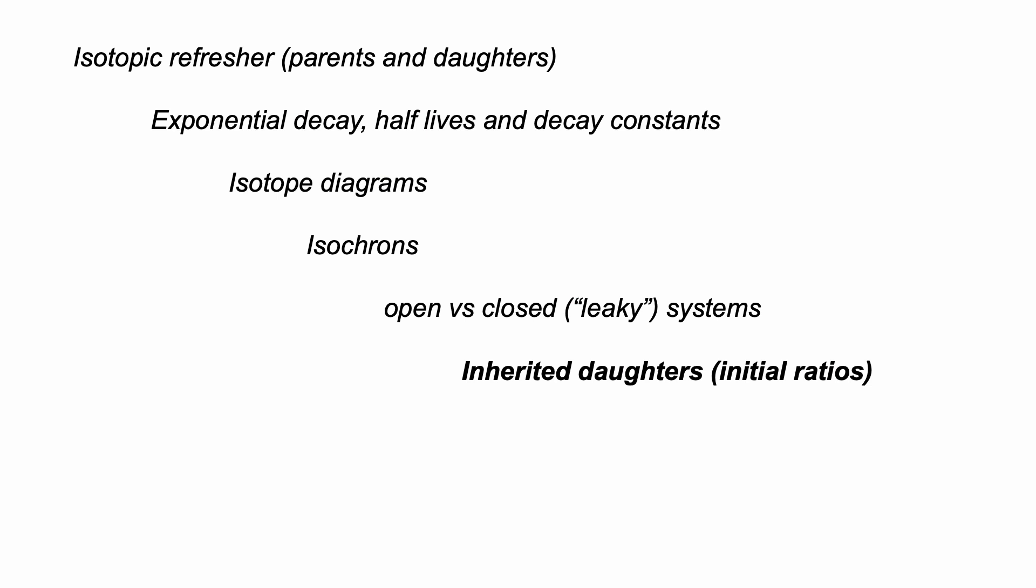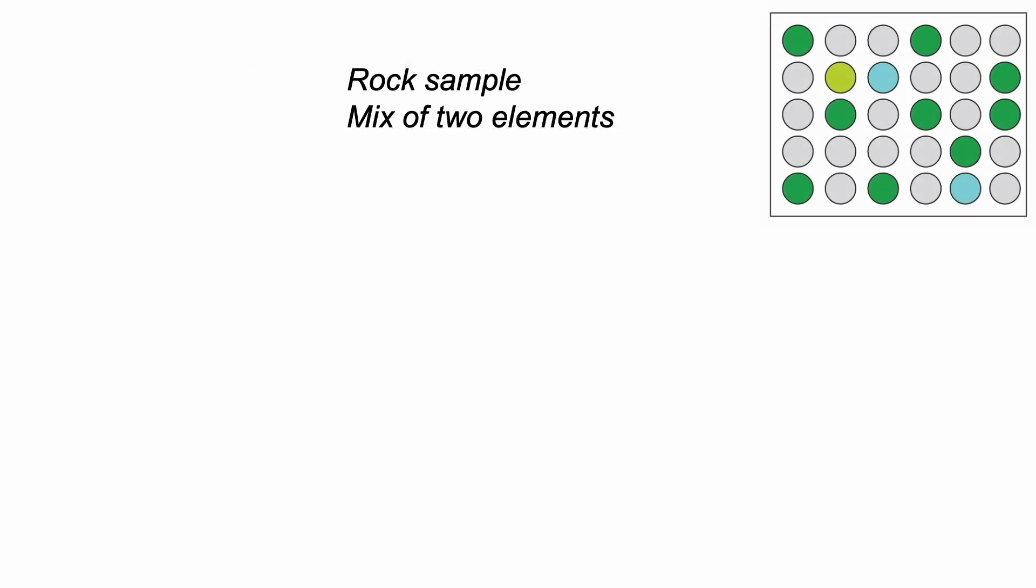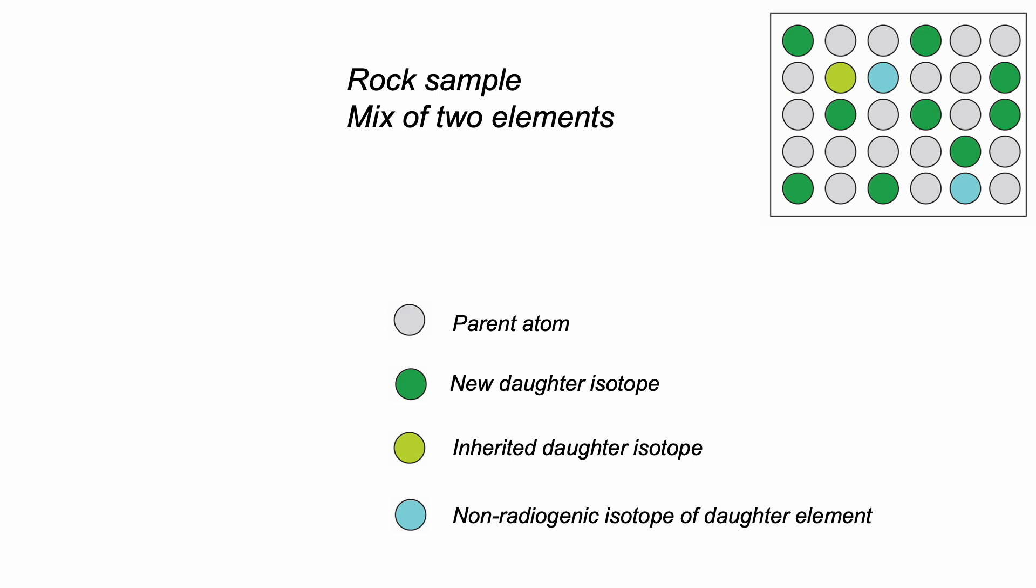Next up, it's the issue of inherited atoms of the daughter isotope. Consider a sample which has parent atoms and a mixture of atoms of the element that includes the radiogenic daughter isotope, and a non-radiogenic isotope of the daughter element. The catch is we can't tell how much of the radiogenic isotope was formed by decay of parents that were once in the sample, and which were incorporated as the rock was formed.